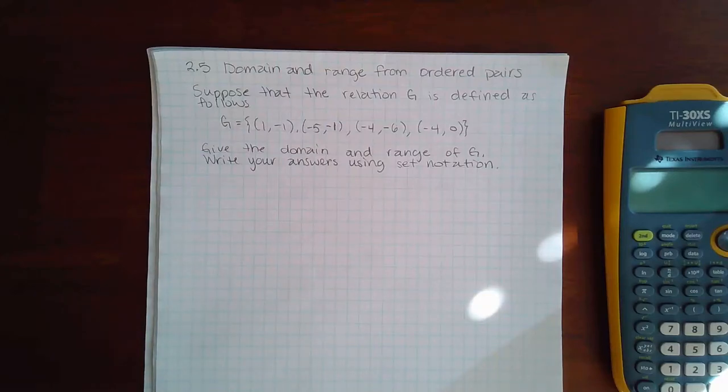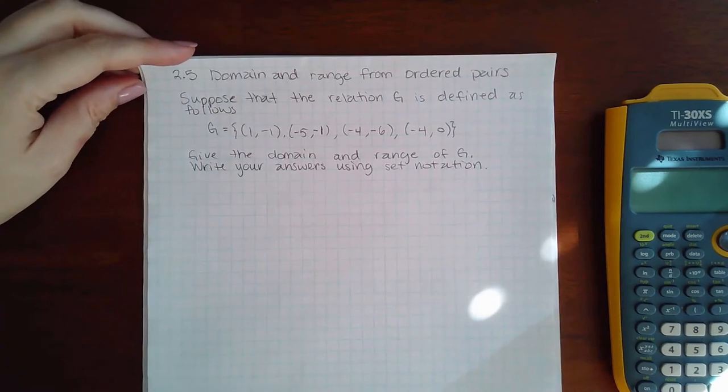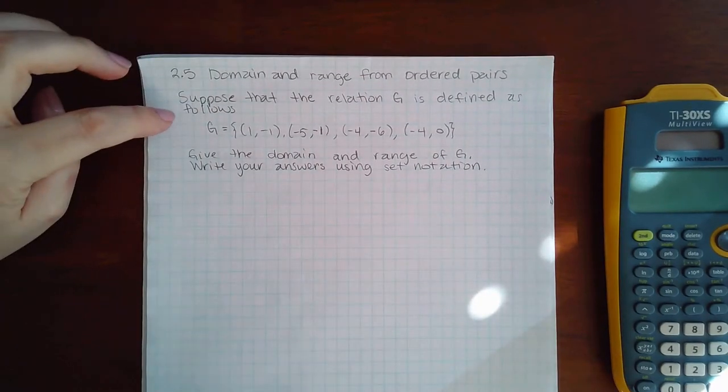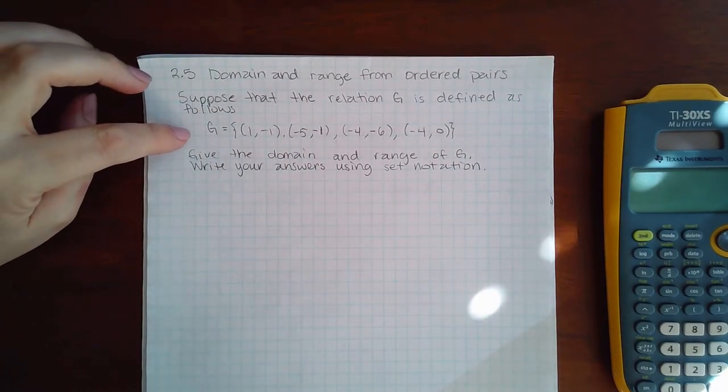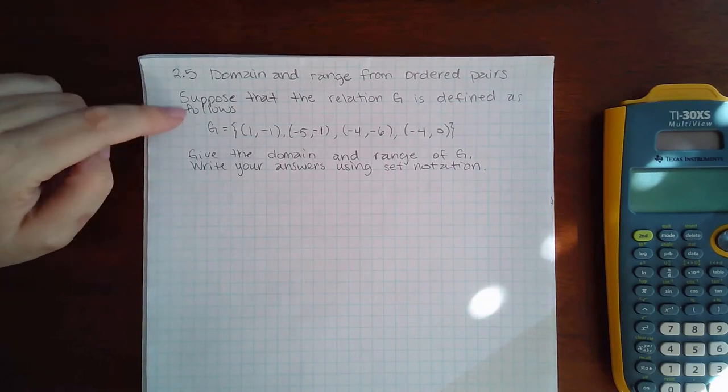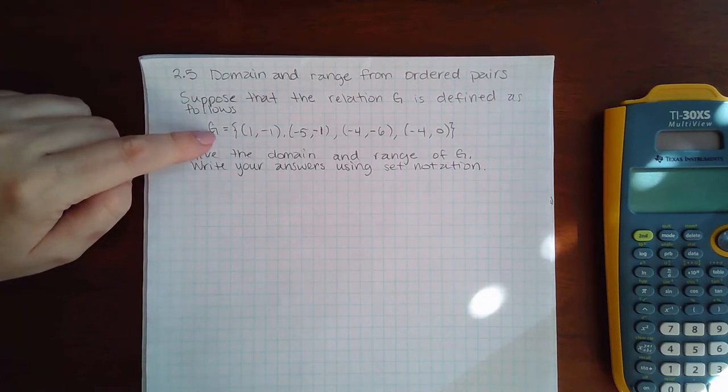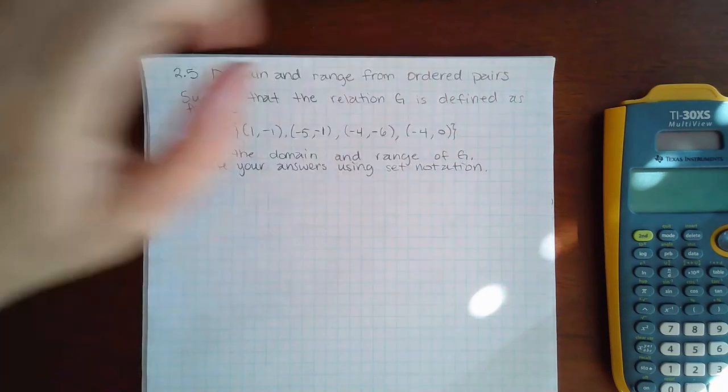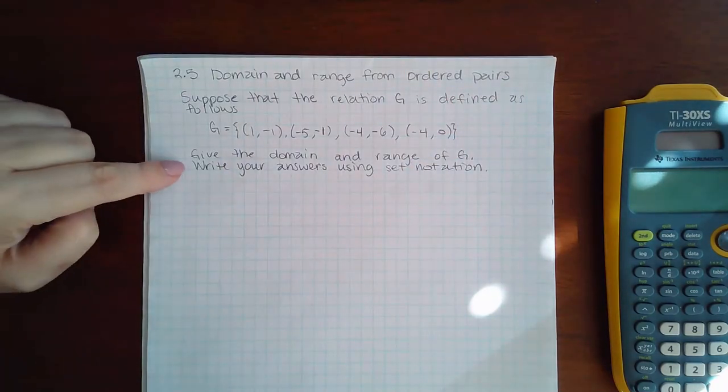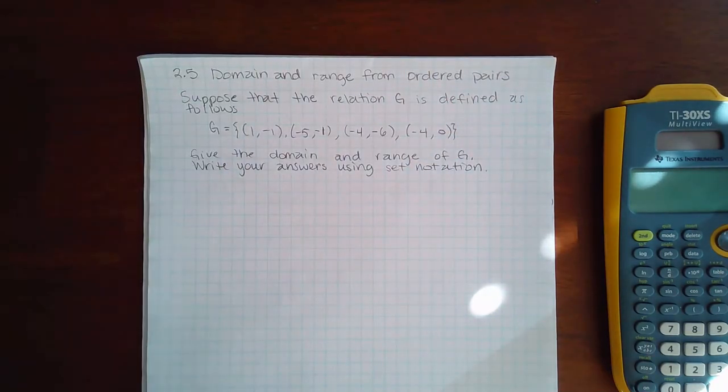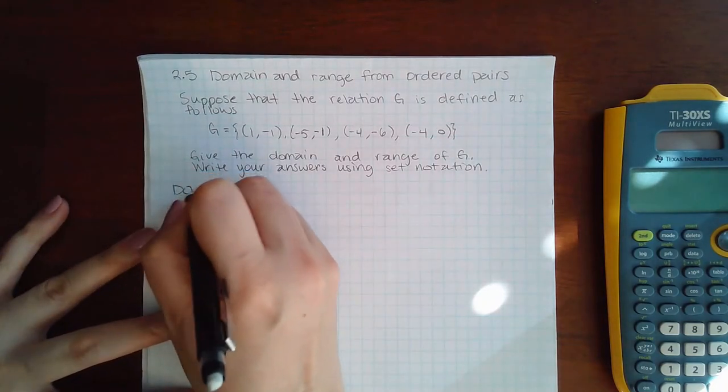Here we have problem 2.5: domain and range of ordered pairs. It says suppose that the relation G is defined as a set of four different points. Give the domain and range of G. Write your answers using set notation. We need to understand what the words domain and range mean.